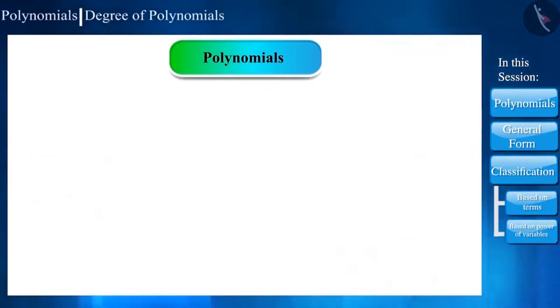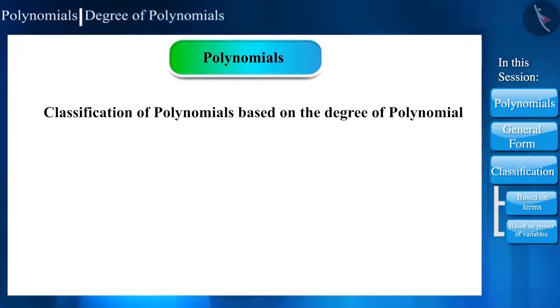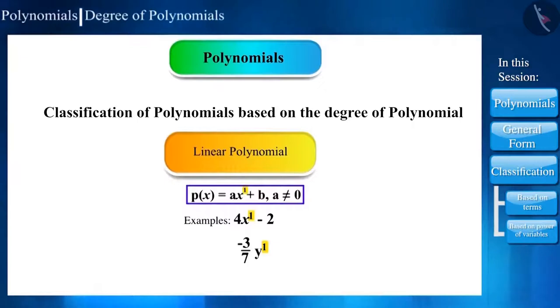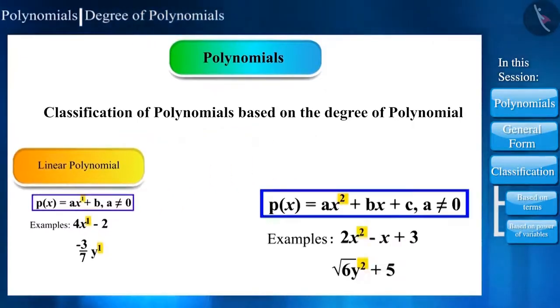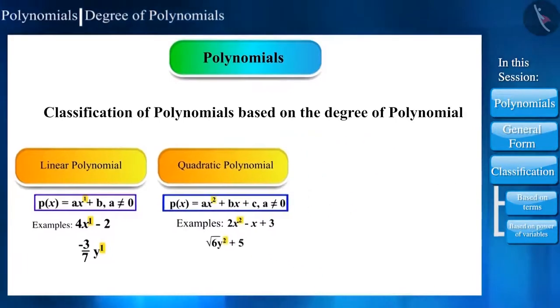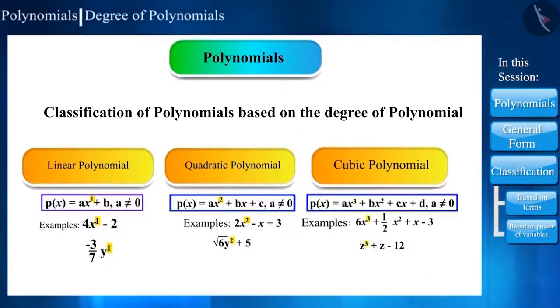Similarly, polynomials are classified based on the degree of polynomial. Such as polynomials having degree 1 are called linear polynomials. Polynomials having degree 2 are called quadratic polynomials. And polynomials having degree 3 are called cubic polynomials.